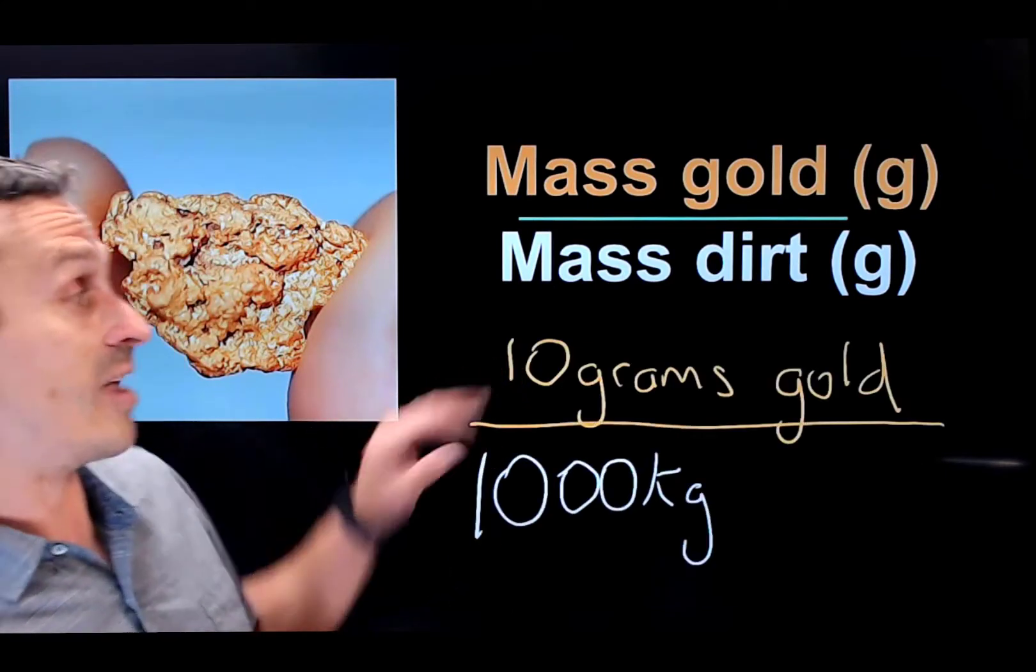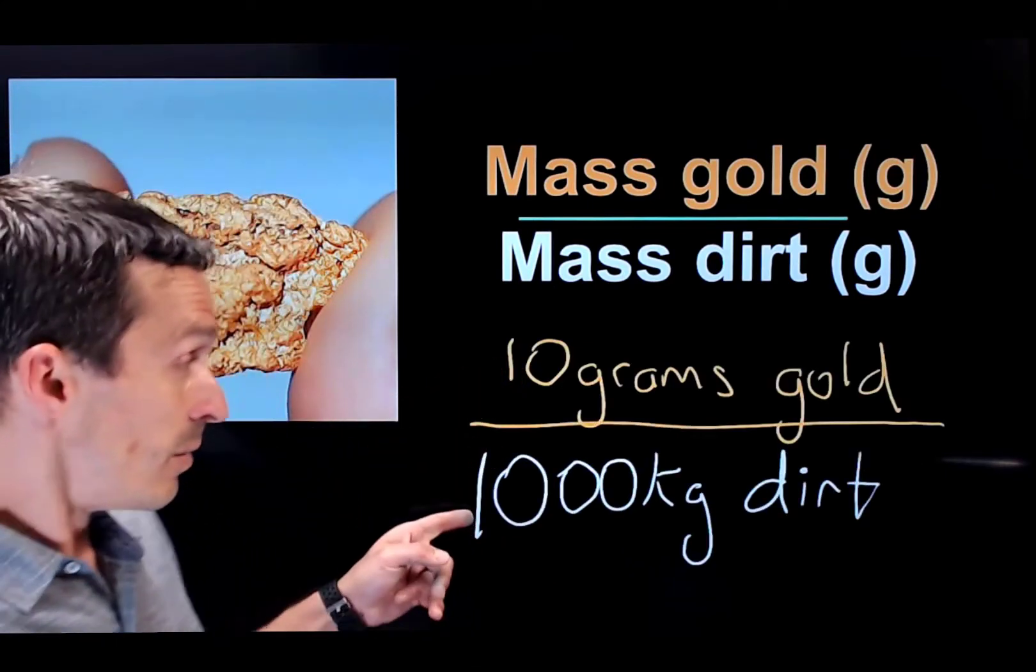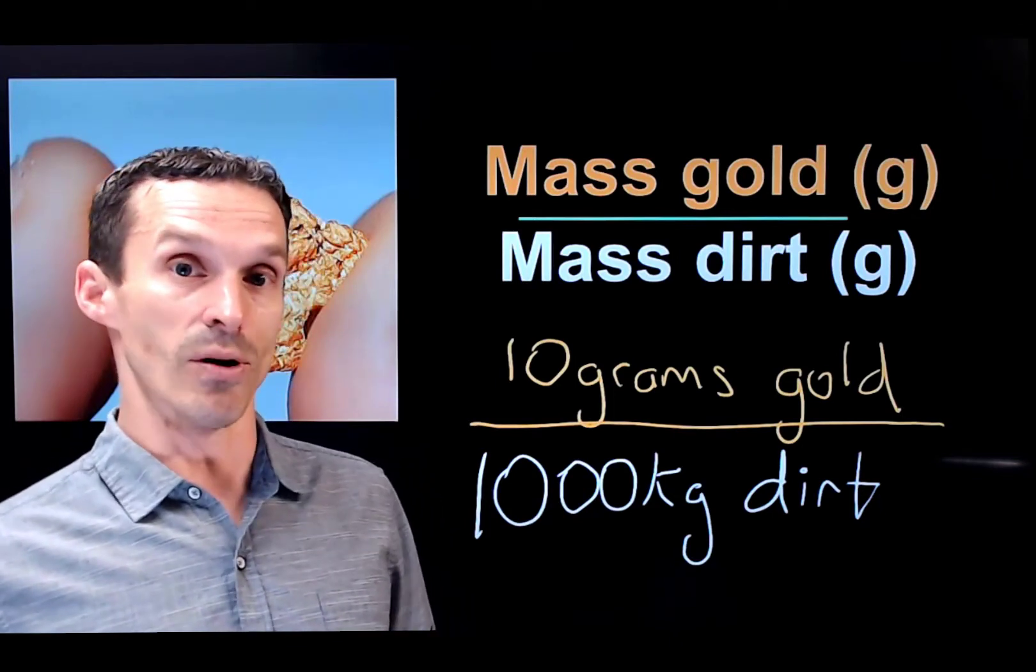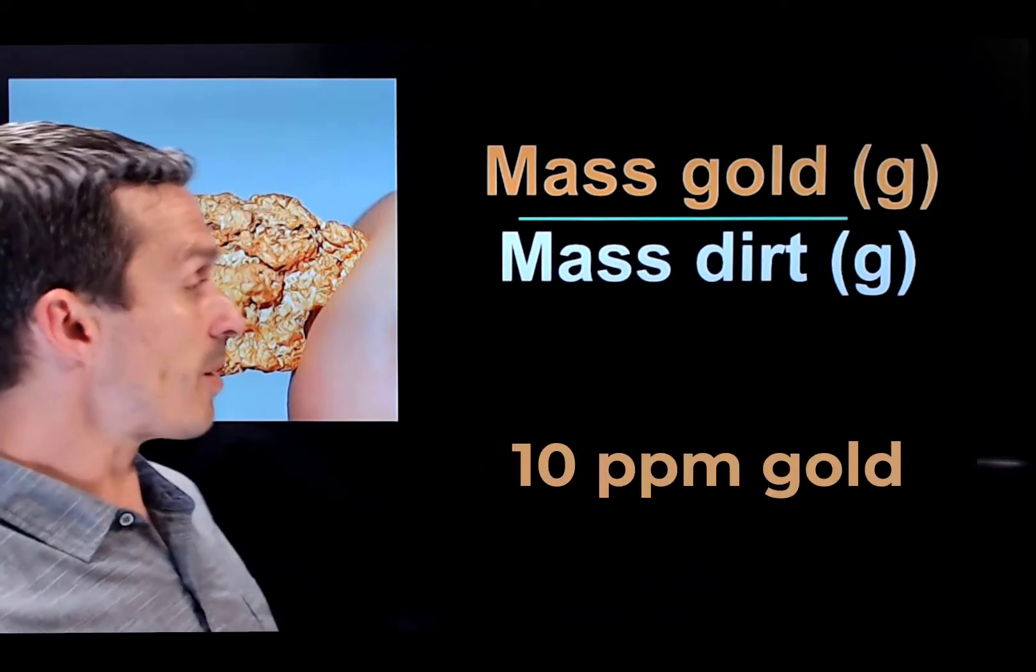if you happen to have a gold mine, let's say, that has a concentration of about 10 grams of gold per million grams of dirt, you've got a pretty decent stash to work with. So that's 10 parts per million.